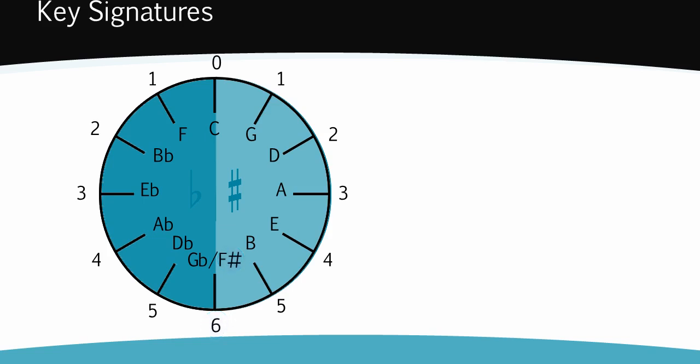But, of course, we also need to know which sharps or flats are in each key signature, not just how many there are. Luckily, the circle of fifths can tell us this as well.